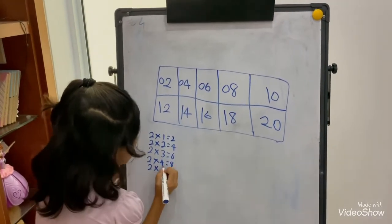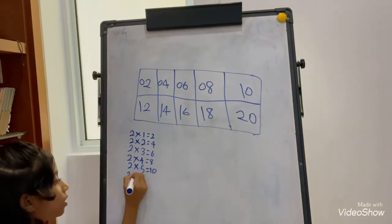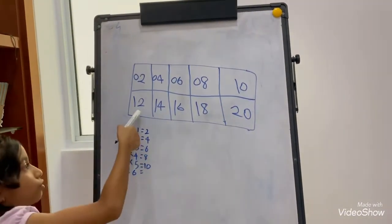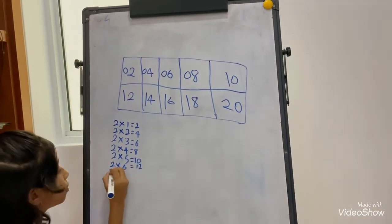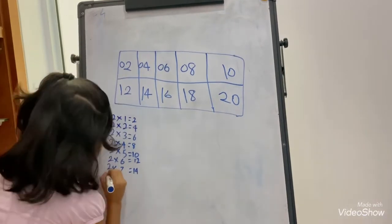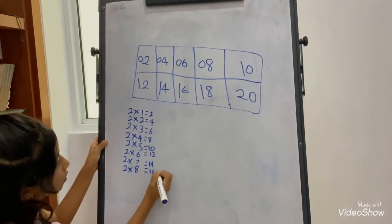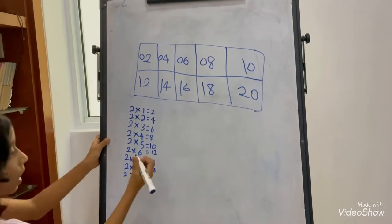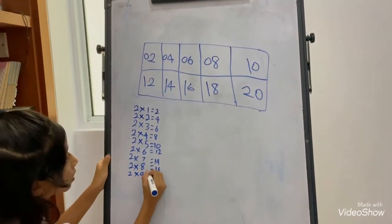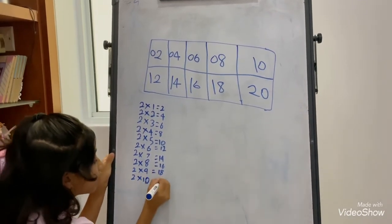2 times 5 equals 10. 2 times 6 equals 12. 2 times 7 equals 14. 2 times 8 equals 16. 2 times 9 equals 18. 2 times 10 equals 20.